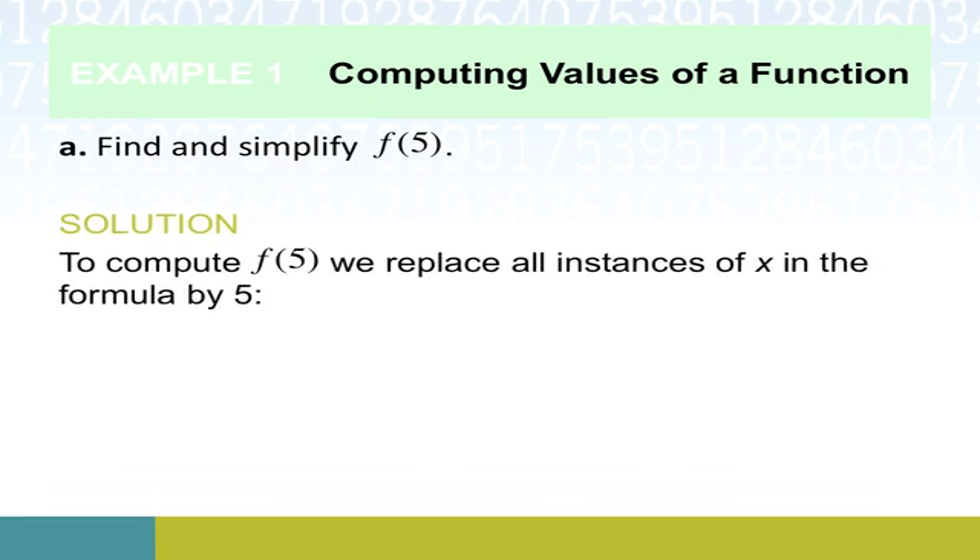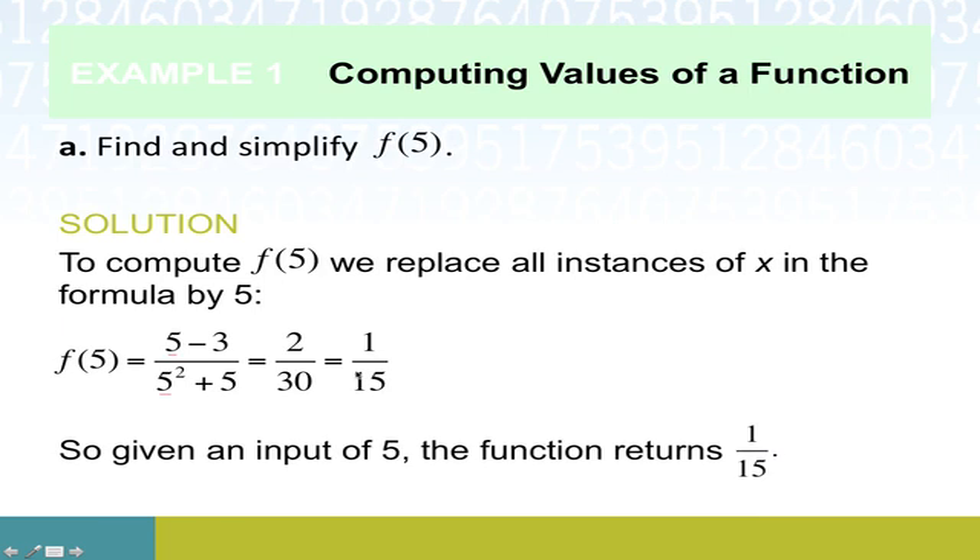First task. If we want to compute f of 5, what we're really doing is saying we no longer have x as the label for our input. Now we're putting in a specific value, 5. So we go back to our original function, we replace x with 5, and if you recall, here's where our x used to be, right there and right there. So now we're replacing it with the number 5. 5 minus 3 is 2 in the numerator. 5 squared is 25, plus another 5 is 30, so great. f of 5 must be 1/15th. Given an input of 5, the output is 1 over 15. So part A is accomplished.